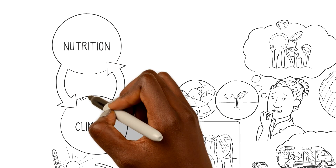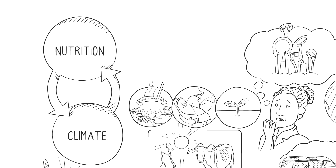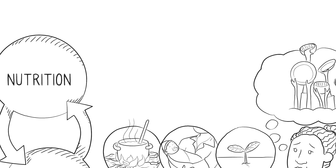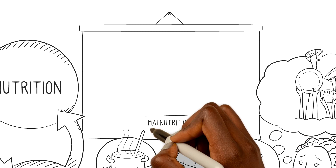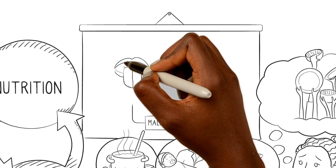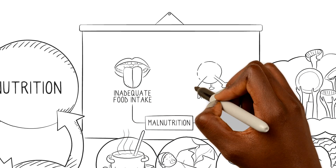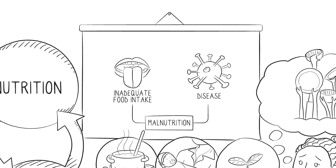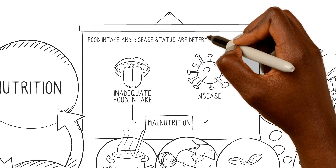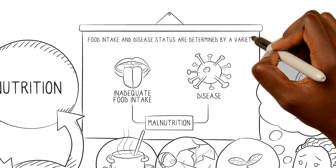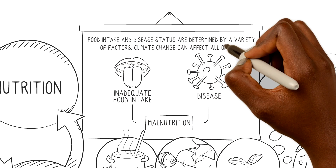Climate and nutrition are interlinked. How? Let's take a closer look. Malnutrition is a result of either inadequate food intake or a disease that prevents the body's uptake of nutrients. Food intake and disease status are determined by a variety of factors, and climate change can affect all of them.